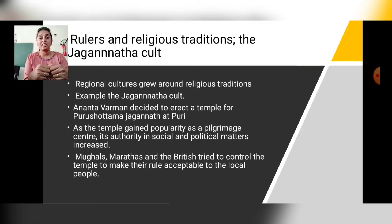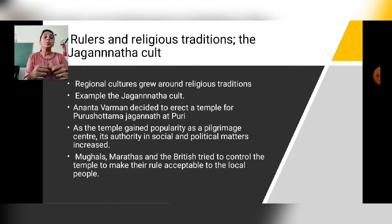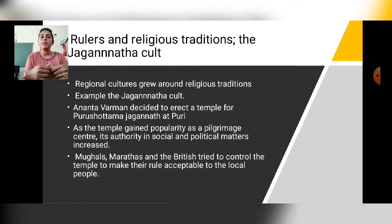Next, the rulers and religious traditions — the Jagannath cult. Regional cultures grew around religious traditions. The Jagannath cult is associated with Puri — Lord Jagannath Temple at Puri, which is in Odisha. Ananta Varman decided to erect a temple for Purushottama Jagannath at Puri. As the temple gained popularity as a pilgrimage center, its authority in social and political matters also increased.